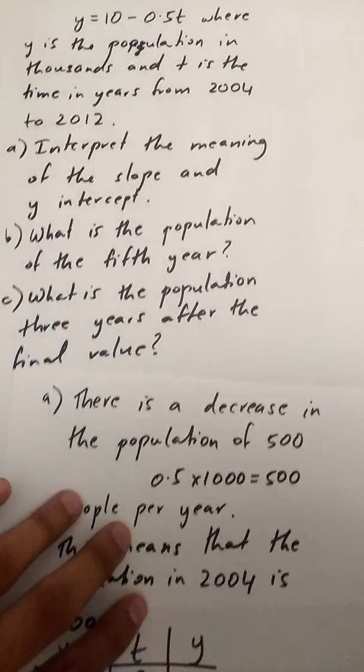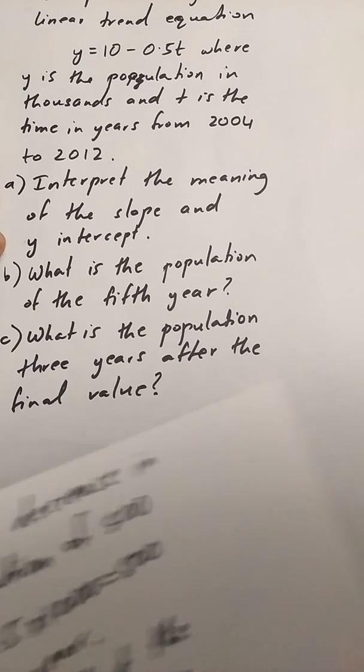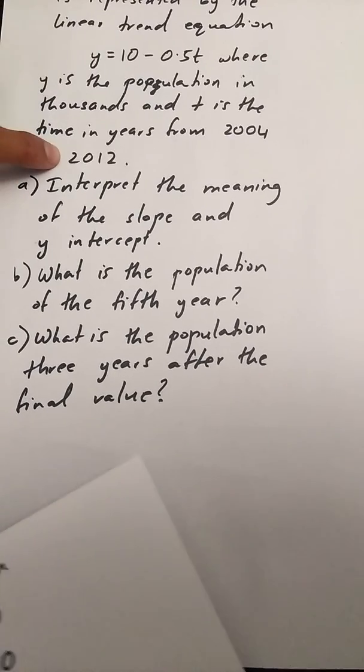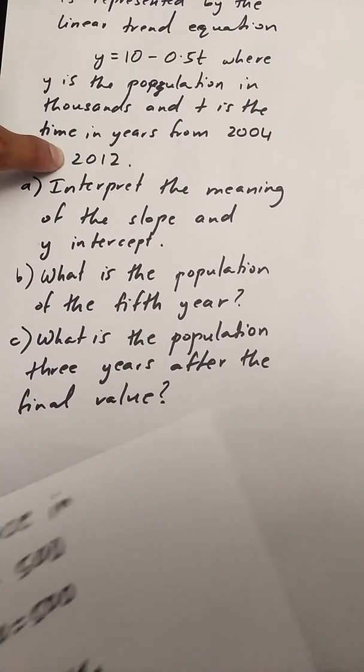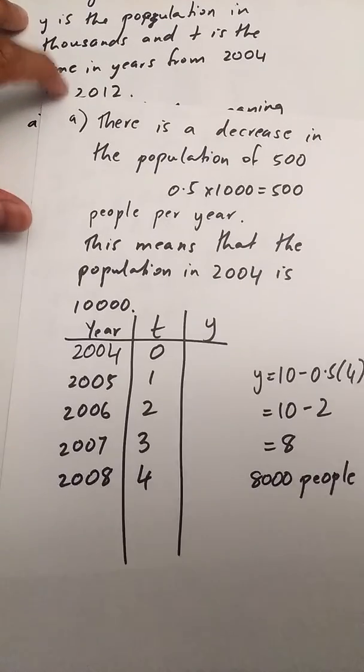And then the C part of the question asks you what is the population three years after the final value. Now the final value in this question is 2012. So I need to find the population three years after that. I'm going to continue in this table.